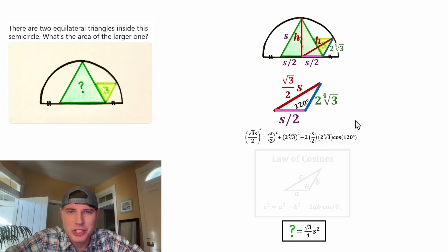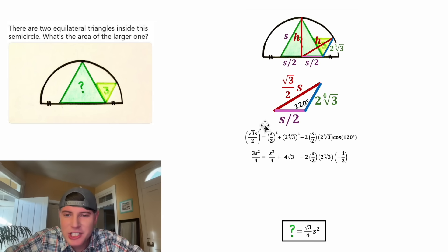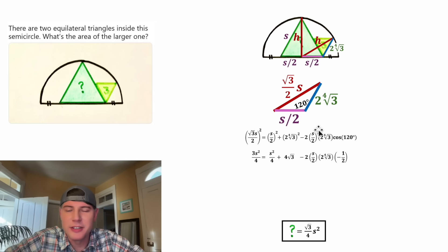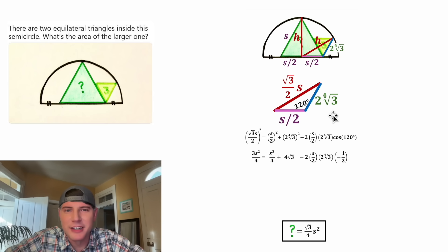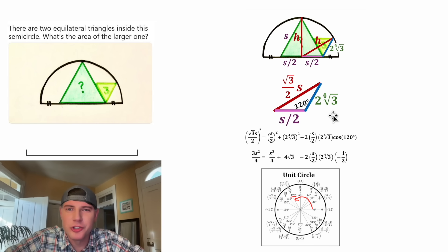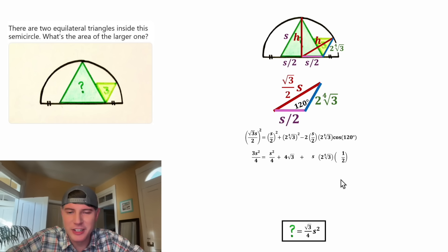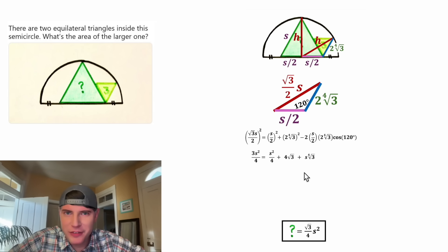Applying the law of cosines to our triangle: H squared equals (S/2) squared plus 2 squared minus two times (S/2) times 2 times cosine of 120. Expanding the left-hand side: root three over two S squared gives three S squared over four. On the right-hand side, S squared over four plus four. The fourth root of three squared is square root of three. The cosine of 120 degrees is negative one half — you can see that on the unit circle. So the subtracted term becomes positive, and after cancellation we're left with plus the fourth root of three times S.